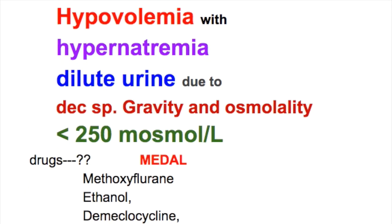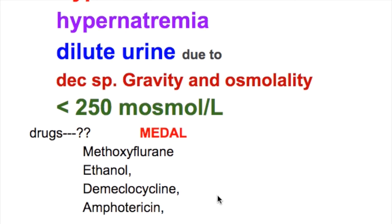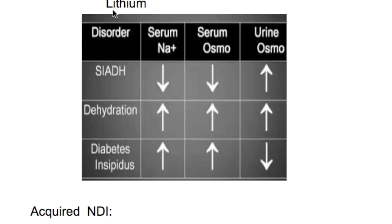The drugs that cause diabetes insipidus are remembered by the mnemonic MEDAL: M for methoxyflurane, E for ethanol, D for demeclocycline, A for amphotericin B, and L for lithium. Lithium is particularly important because it is used long-term in psychiatric patients with bipolar disorder, and its use may cause diabetes insipidus.